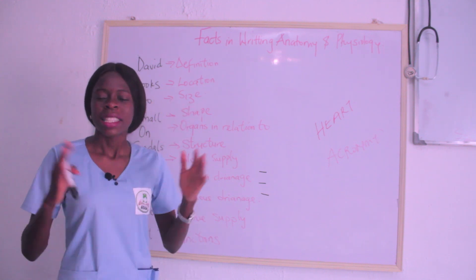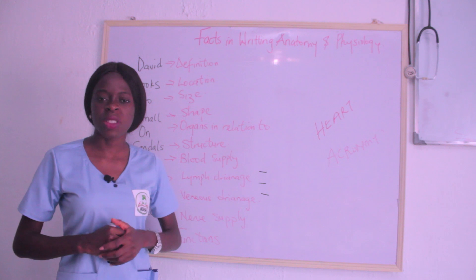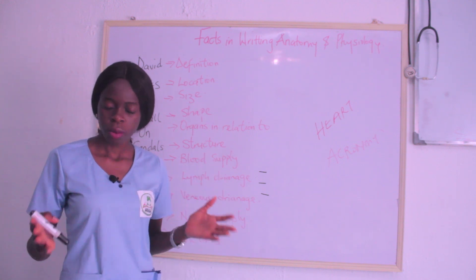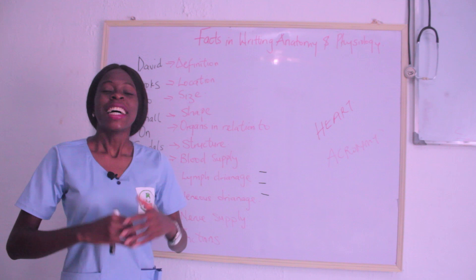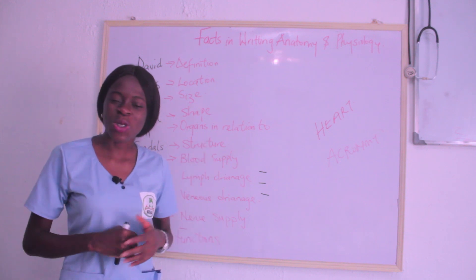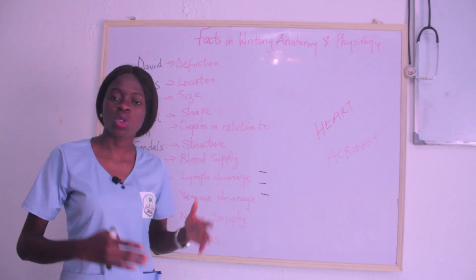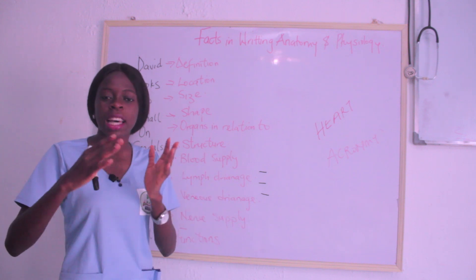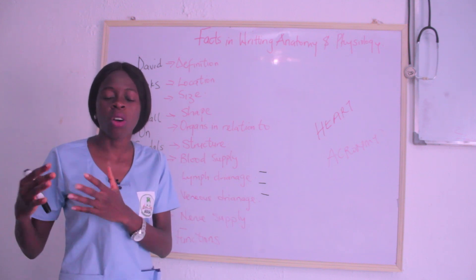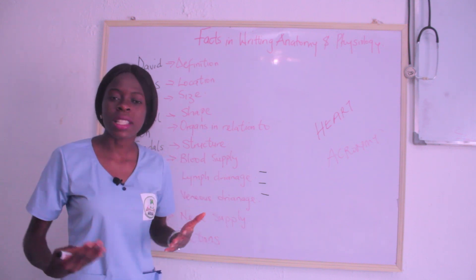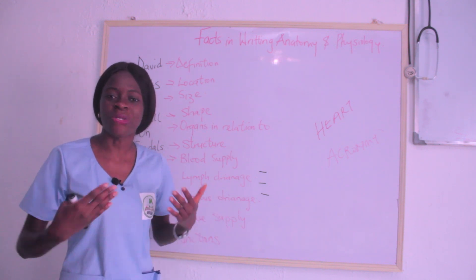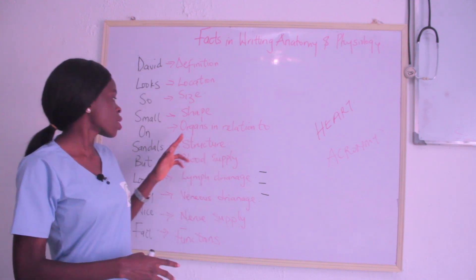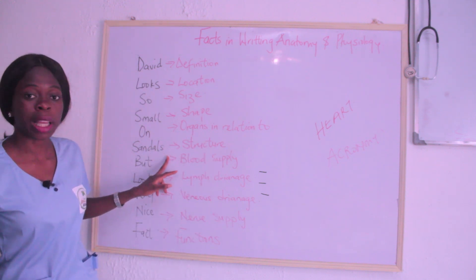Under structure, you also tell us that the heart has four chambers — the left and right ventricles and the left and right atria. You also mention the inferior vena cava and the superior vena cava, as well as the valves present in the heart. So that is what S — Structure — covers.